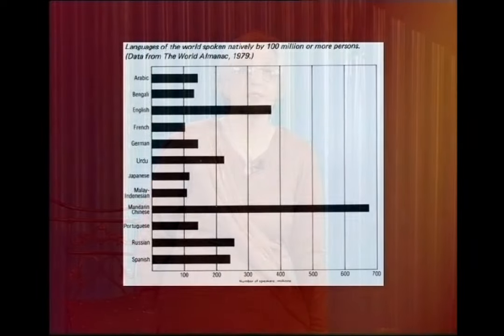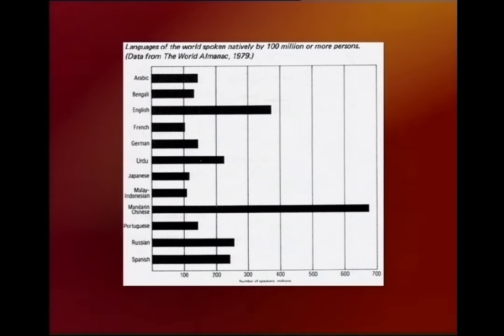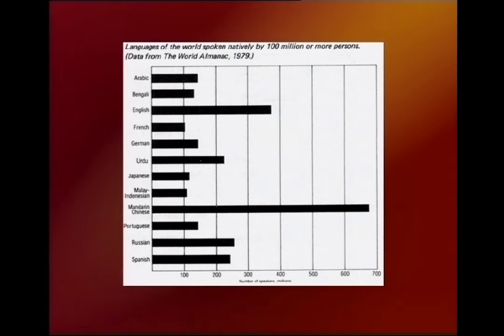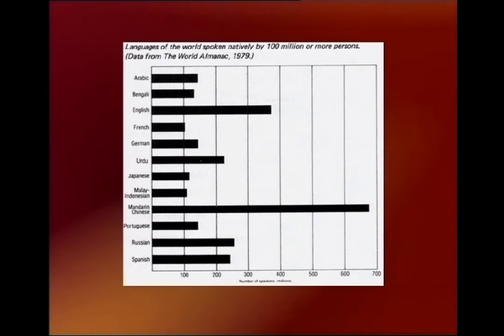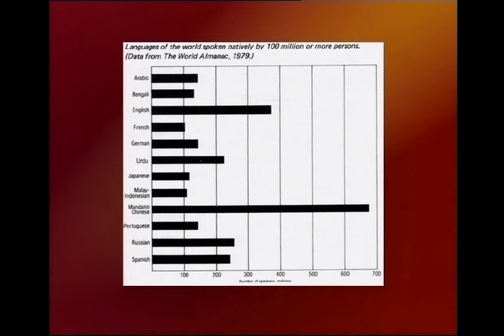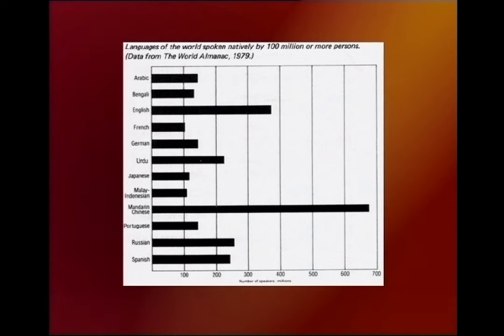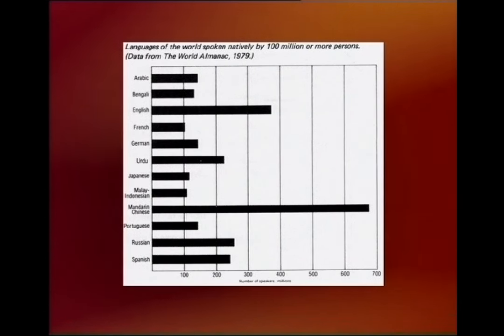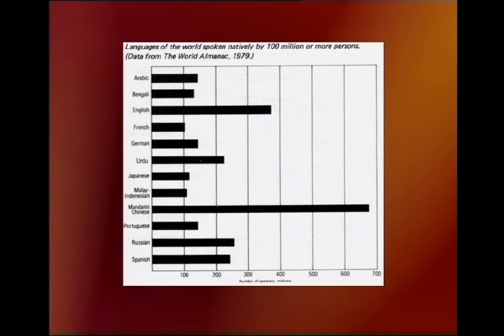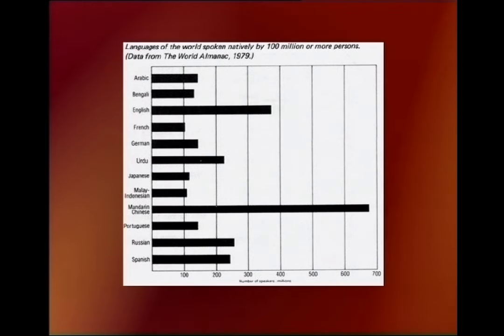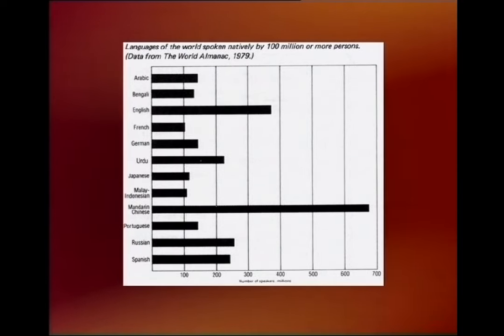Now you will look at another graph — a bar graph. It is similar to the line graph except that bars are used instead of dots and lines, and these can extend from the vertical or the horizontal axis. This graph gives data about the world from 1979, a long time ago — many of you were not even born at that time.